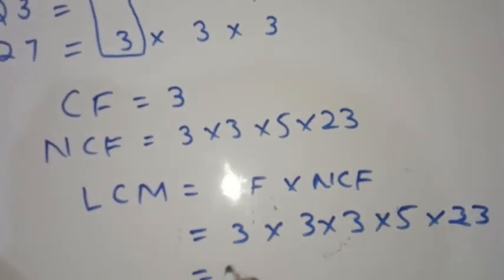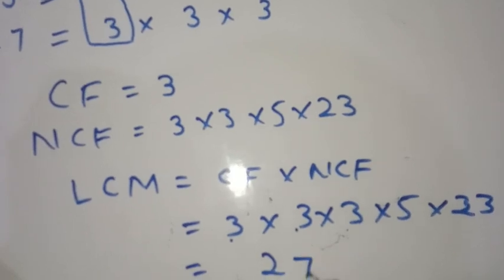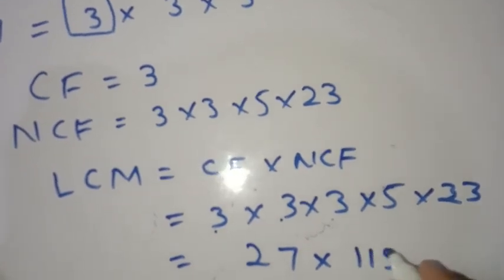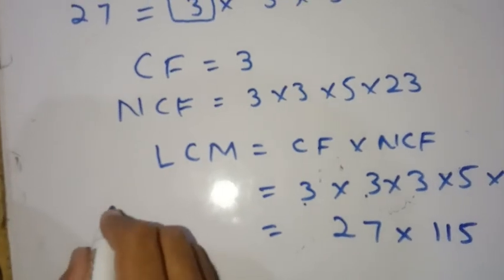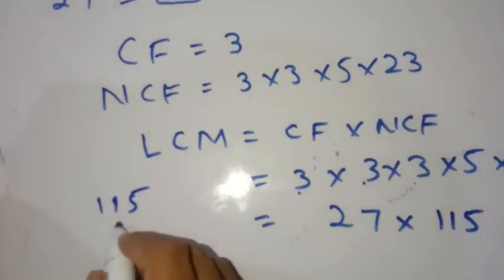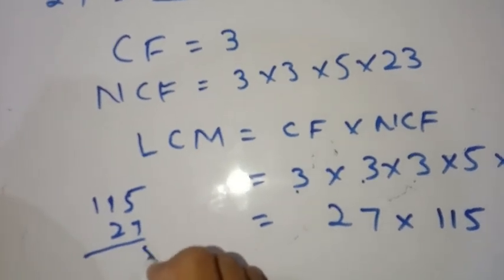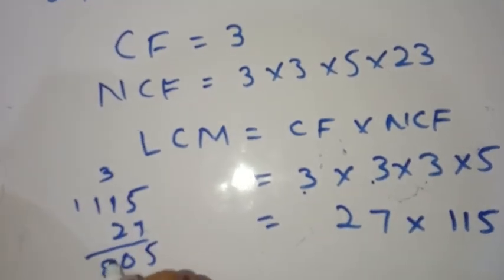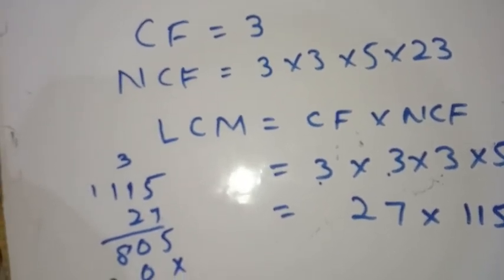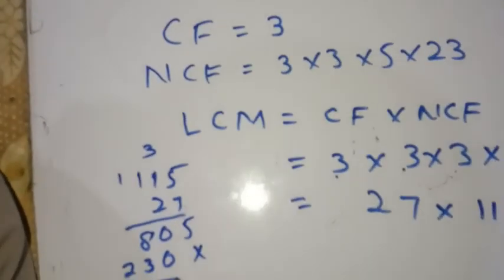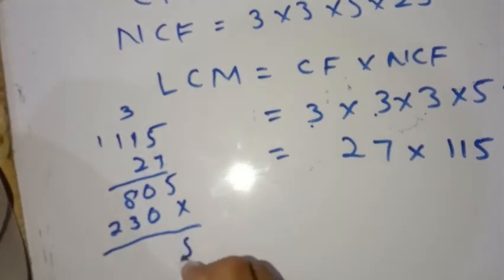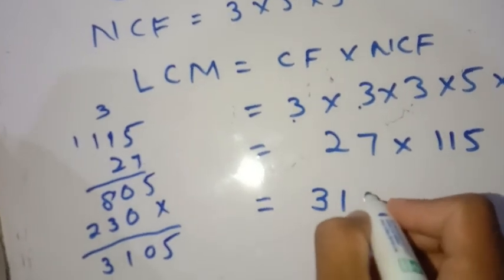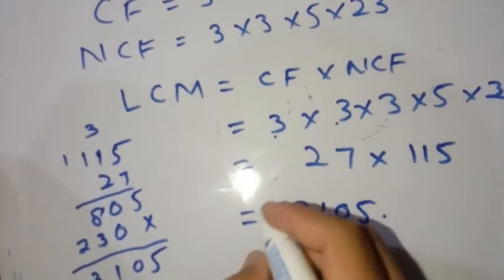Now we calculate: 3 × 3 × 3 = 27. Then 27 × 5 = 135. Then 135 × 23 = 3105. Therefore, the LCM of 15, 23, and 27 is 3105.